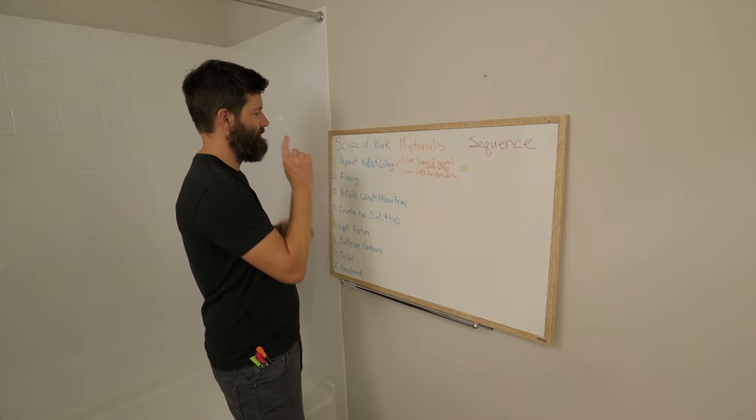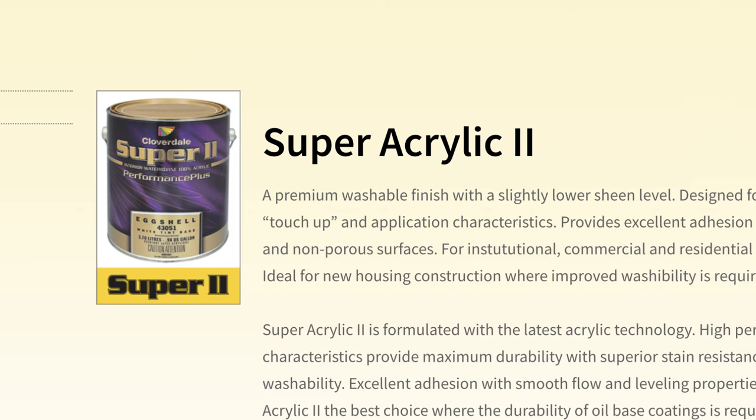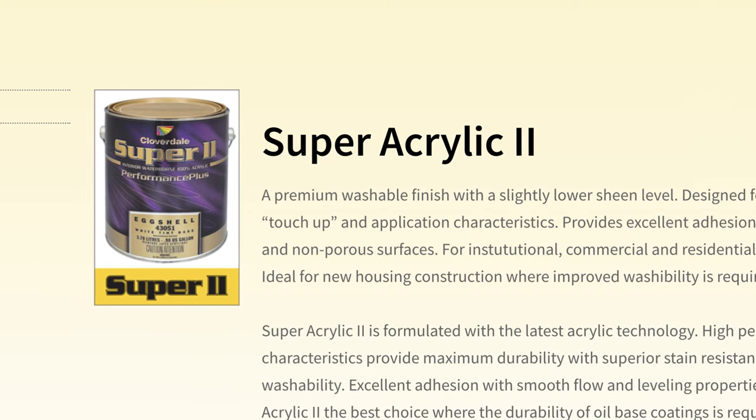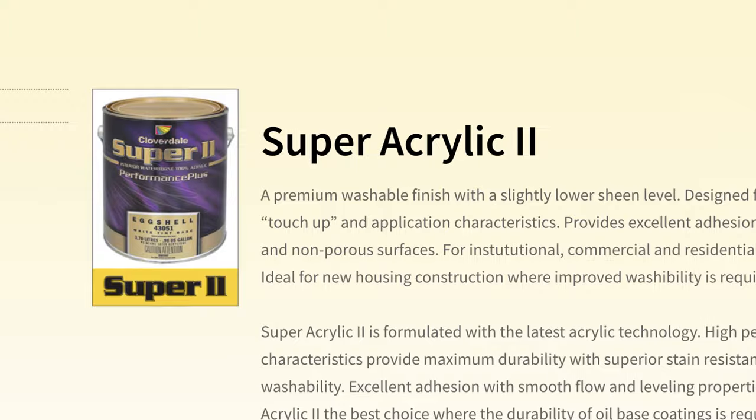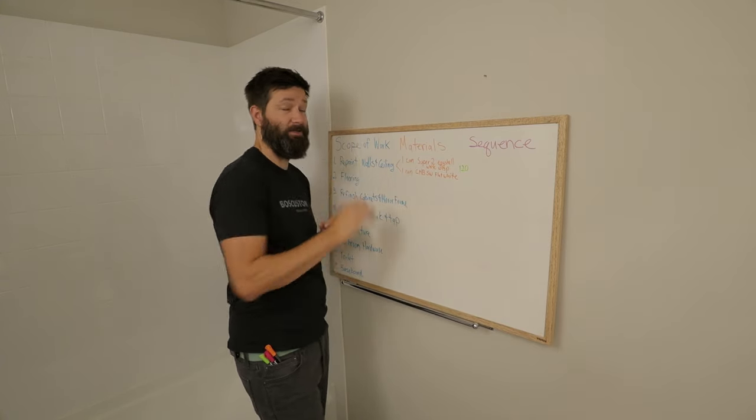So now if we're looking at the first item, repainting the walls and ceilings, I'm going to need one can. I'm going to get some super two eggshell paint from Cloverdale paints. It's an awesome paint.